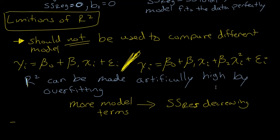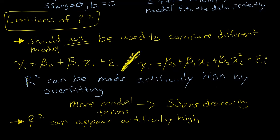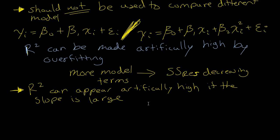The second limitation is that r-squared can appear artificially high if the slope of your model is large. You may think you have a really well-fit model when in reality what you have is just a really large slope. I'm going to show an example of what this means in Excel.